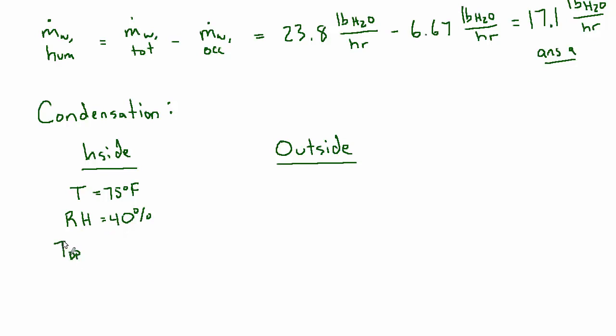So the dew point temperature turns out to be 49.1 degrees. And now outside, let's draw a little line - this is our glass window. Outside we have a temperature of 25 degrees. So then the question becomes: what's going to be the inside surface temperature on that window?